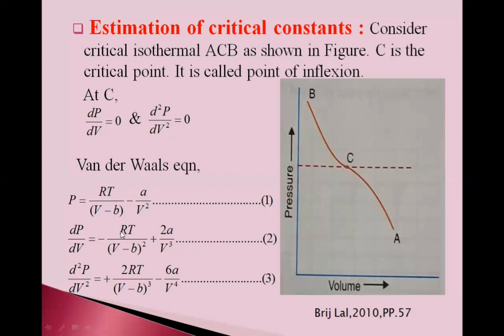dP by dV is equal to, differentiate this. So, first term, RT is constant. And 1 upon V minus b. Differential of 1 upon V is minus 1 upon V square. So, here minus V minus b square is taken.